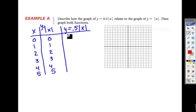Let's switch over here to y equals 0.5 times the absolute value of x. The absolute value of 0 is 0 times 0.5 is still 0. The absolute value of 1 is 1 times 0.5 is going to be 0.5. The absolute value of 2 is 2 times 0.5 is going to be 1. The absolute value of 3 is 3 times 0.5 is going to be 1.5. Absolute value of 4 times 0.5 is going to be 2. And the absolute value of 5 times 0.5 is going to be 2.5. So what I'm noticing here is that we're just taking half of the absolute value function. Our y values are being cut in half.